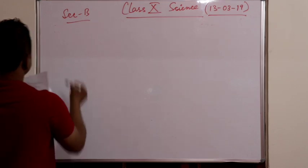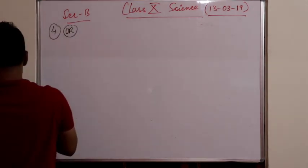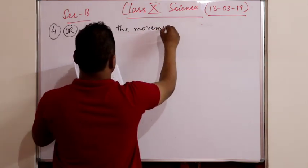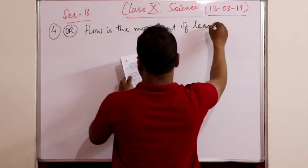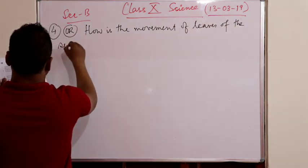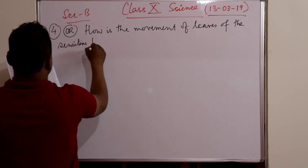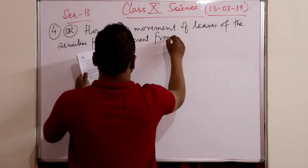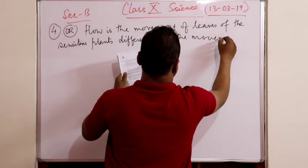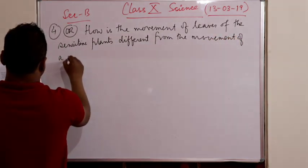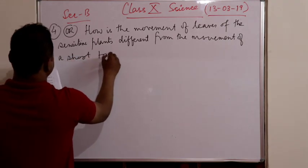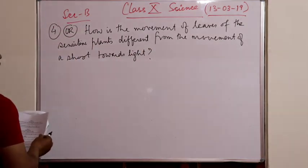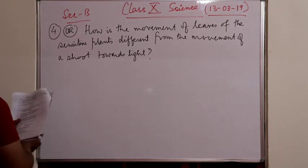The OR part: how is the movement of leaves of the sensitive plant different from the movement of a shoot towards light? This was the question.